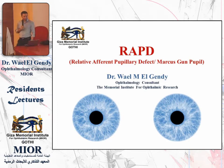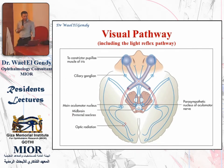In order to understand the relative afferent pupillary defect, first we need to go through the visual pathway and the light reflex pathway. The visual pathway starts in the retina, and then the optic nerve, and then passes the chiasma and the optic tract. From the optic tract, you relay in the lateral geniculate nucleus, and from the lateral geniculate nucleus comes out the optic radiation, which ends in the occipital visual cortex.